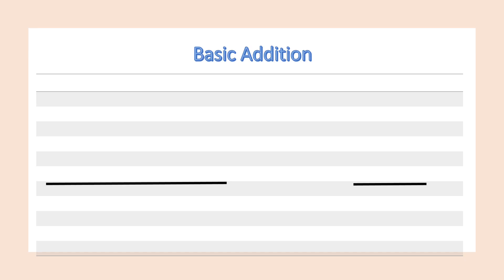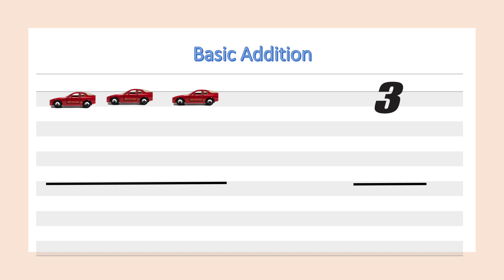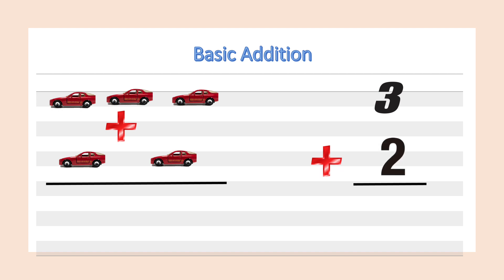Let's look at another example. Here we have some cars. Let's count them together: one, two, three — we have three cars, plus one, two — plus two cars.